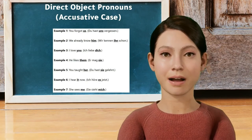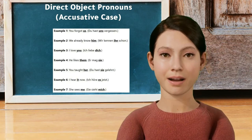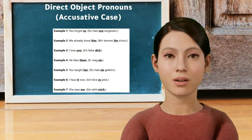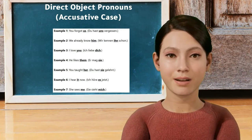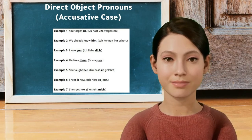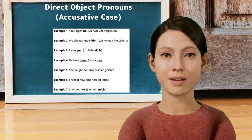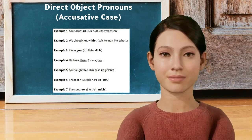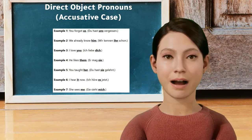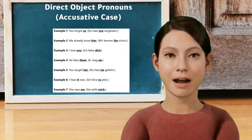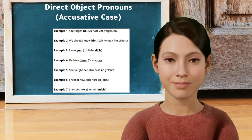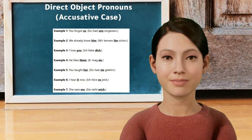Now let's look at some direct object pronouns in the accusative case. Example one: 'You forgot us' — Du hast uns vergessen. Example two: 'We already know him' — Wir kennen ihn schon. 'I love you' — Ich liebe dich. 'He likes them' — Er mag sie. 'You taught her' — Du hast sie gelernt. 'I hear it now' — Ich höre es jetzt. 'She sees me' — Sie sieht mich.